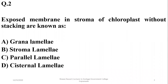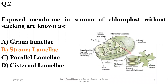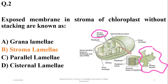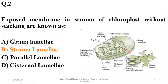Question number 2: Exposed membranes in the stroma of chloroplast without stacking are known as stroma lamellae. When we see stacking, we name them grana lamellae. Stroma lamellae is the portion called the intergranum region, which is not stacking and is exposed.